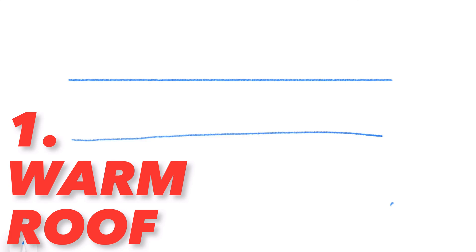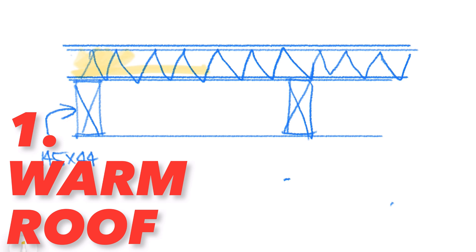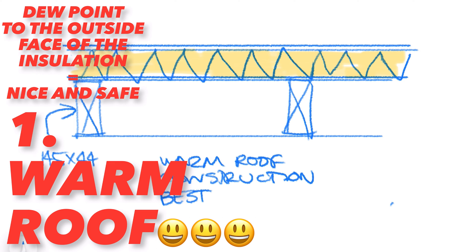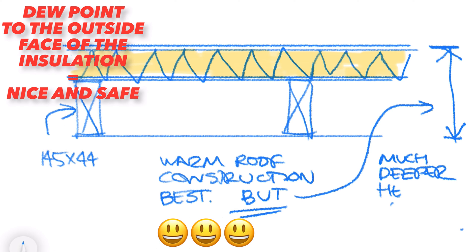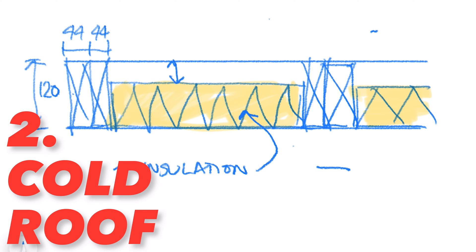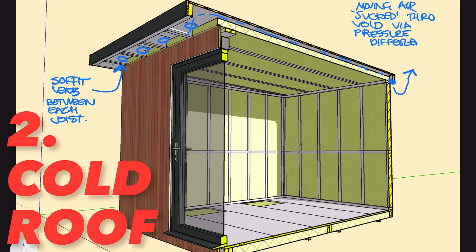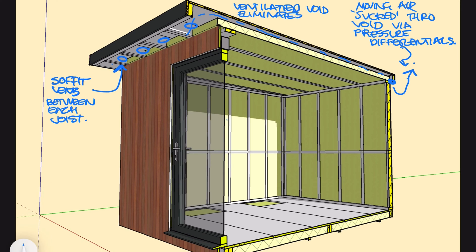The best solution for keeping the dew point as far to the outside and away from the structure is a warm roof, since the insulation is on the outside of the structure and the structure is therefore kept warm. Nothing's ever simple in building, however, and height issues can make a warm roof not feasible. Next I might consider a cold ventilated roof, since the ventilation and airflow within the cavity takes care of any moisture from condensation and the insulation is between, not above, the joists.